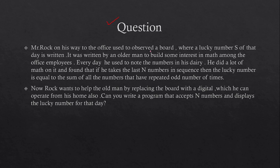It was written by an older man to build some interest in math among the office employees. Every day he used to note the numbers in his diary. He did a lot of math on it and found that if he takes the last N numbers in sequence, then the lucky number is equal to the sum of all the numbers that have repeated an odd number of times.